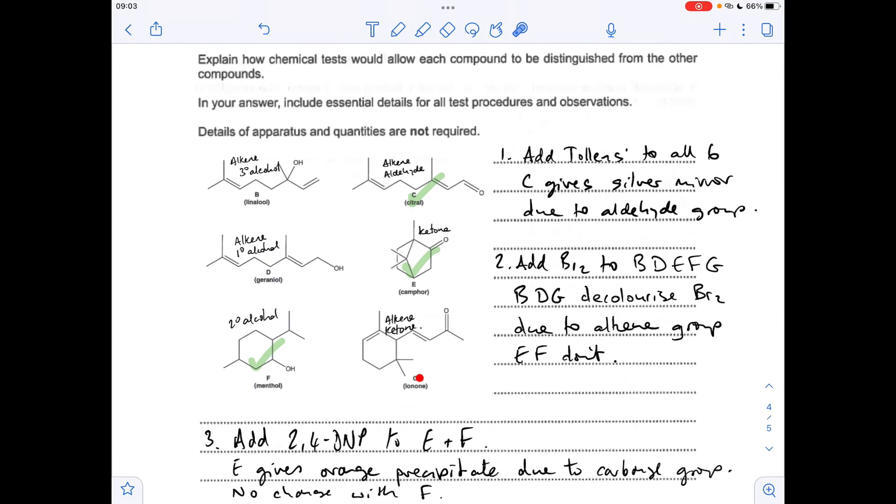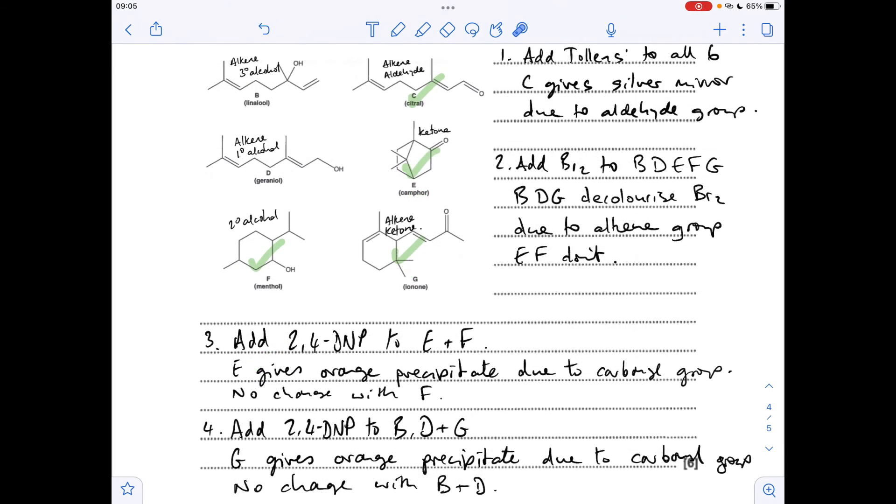So we just need to work through B, D, and G now. The next thing I'm going to do is add 2,4-DNP to these, and you can see that G will give an orange precipitate because it's got this ketone group, carbonyl group, whereas B and D haven't, so they won't give any orange precipitate. So we're down to just B and D now to distinguish between.